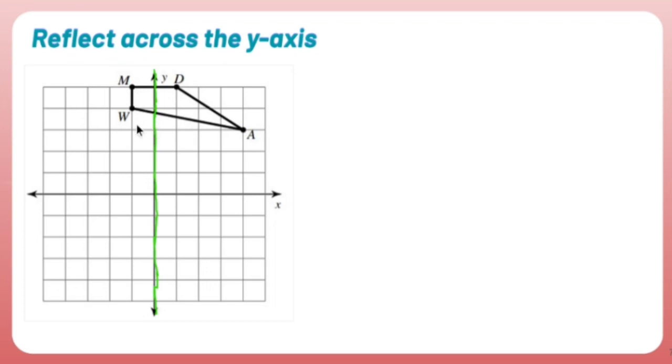So let's graph it 1, 2, 3, 4 units away in the opposite direction and call it A prime. Let's do it again with the other letters. We're going to run into each other. That's okay.